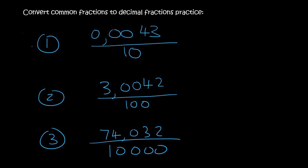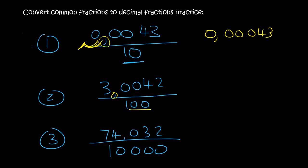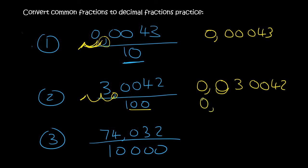Here are three more — these ones are a little bit weird. The first one: dividing by 10, so you look where the decimal is and move it once. The answer is 0.00043. For the next one the decimal is over there but there are two zeros, so we move it twice: 1, 2. Put your comma, there's an empty space, then 30042. Fill the empty space with a zero, and if there's nothing in the front add a zero. So the final answer is 0.030042.